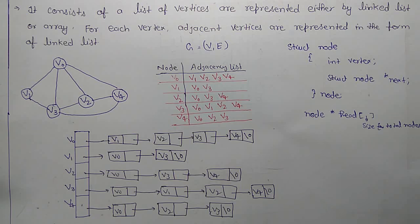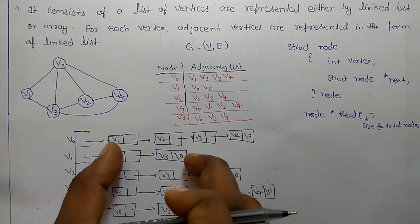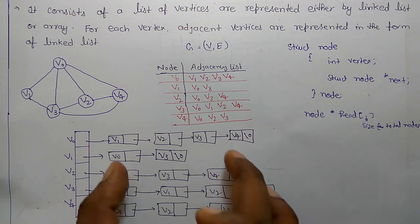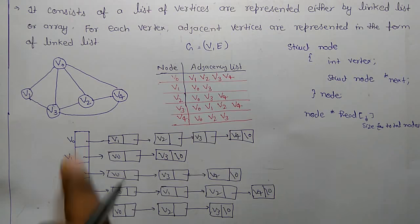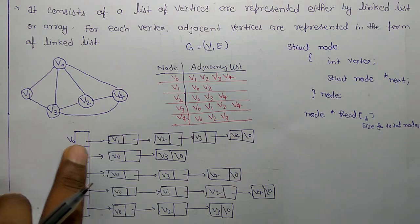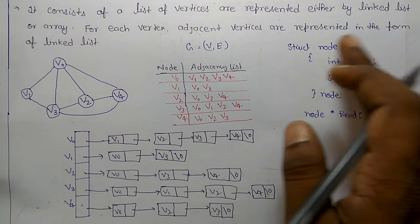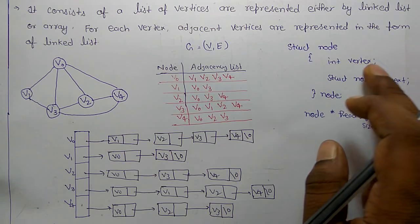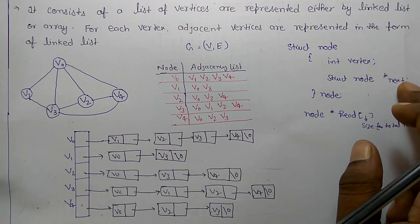This is adjacency link list representation where adjacency nodes we have represented in the form of linked list, and this is array pointer from where we can start of vertices. This is adjacency link list and its representation is vertex and node next pointer.